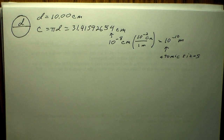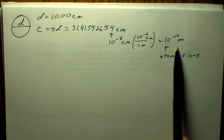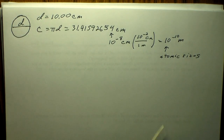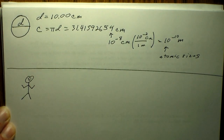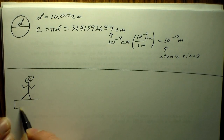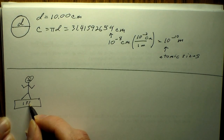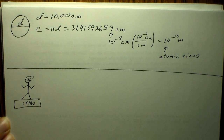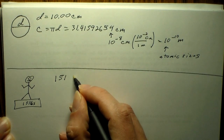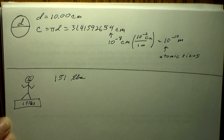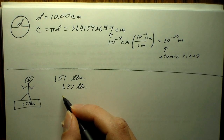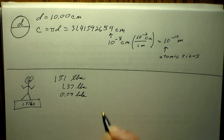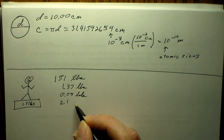Let's take another example. Say you step on a scale and it reads 151 pounds. Then you eat 1.37 pounds of food, put on a watch weighing 0.09 pounds, and put on shoes weighing another 2.1 pounds.